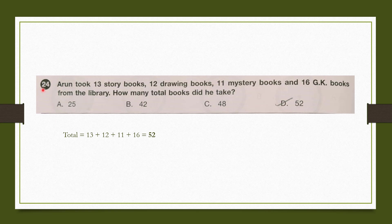Question number 24: Arun took 13 story books, 12 drawing books, 11 mystery books and 16 GK books from the library. How many total books did he take? We need to add all the books: 13 plus 12 plus 11 plus 16 equals 52. So our answer is option D.